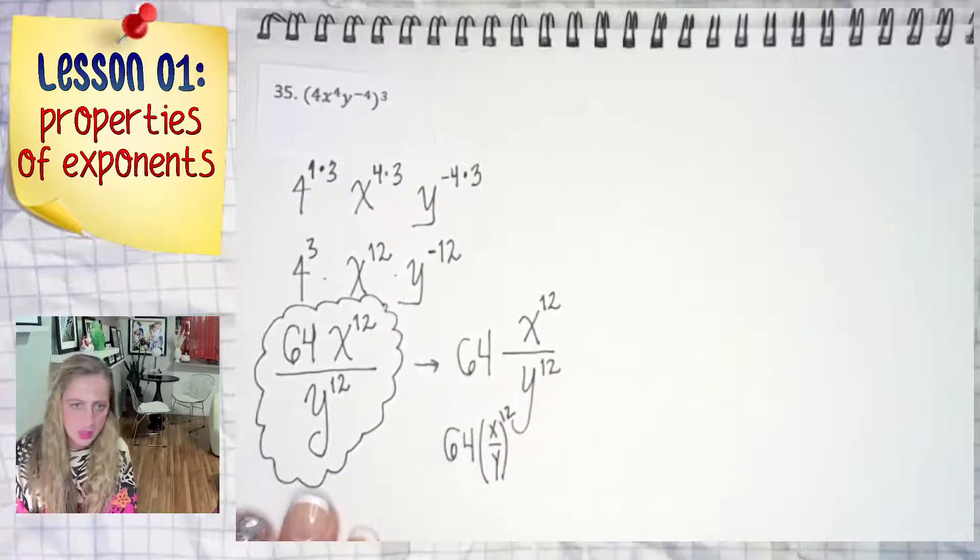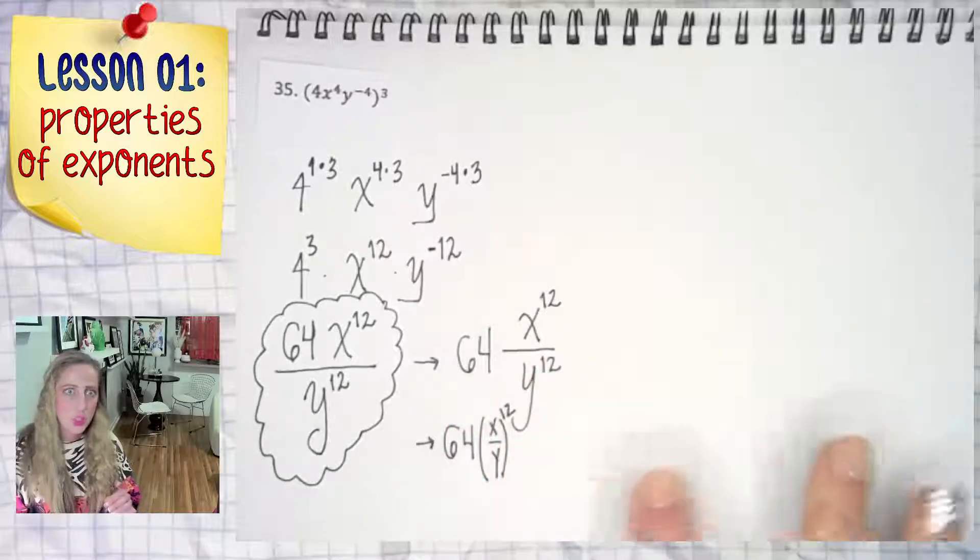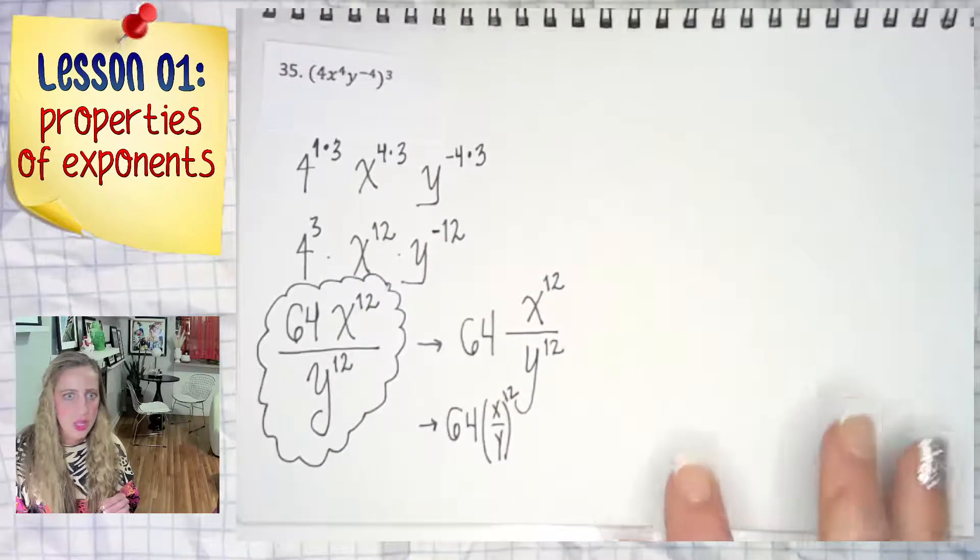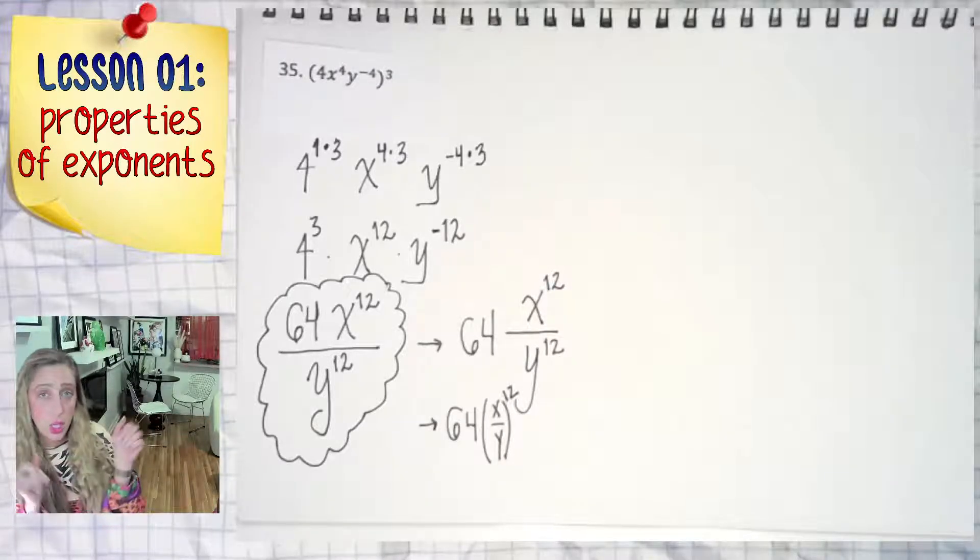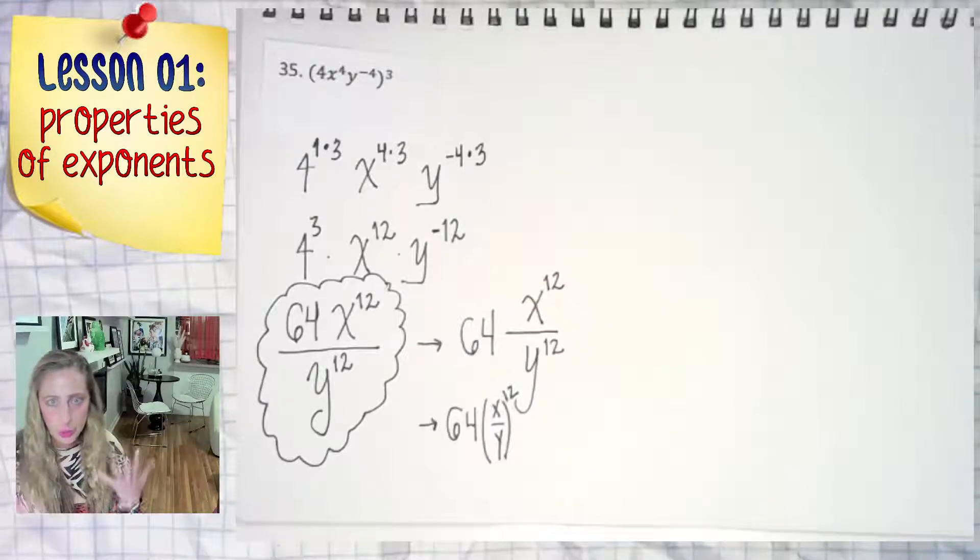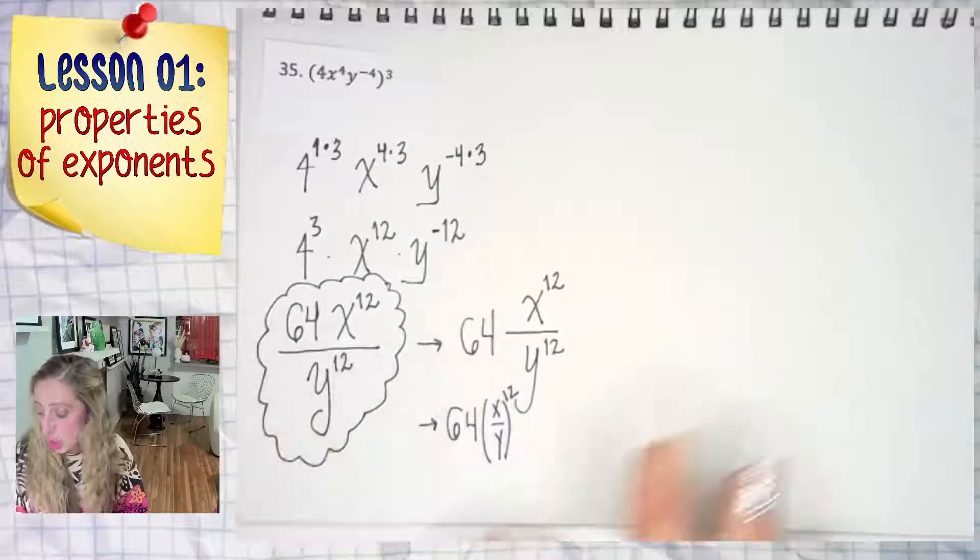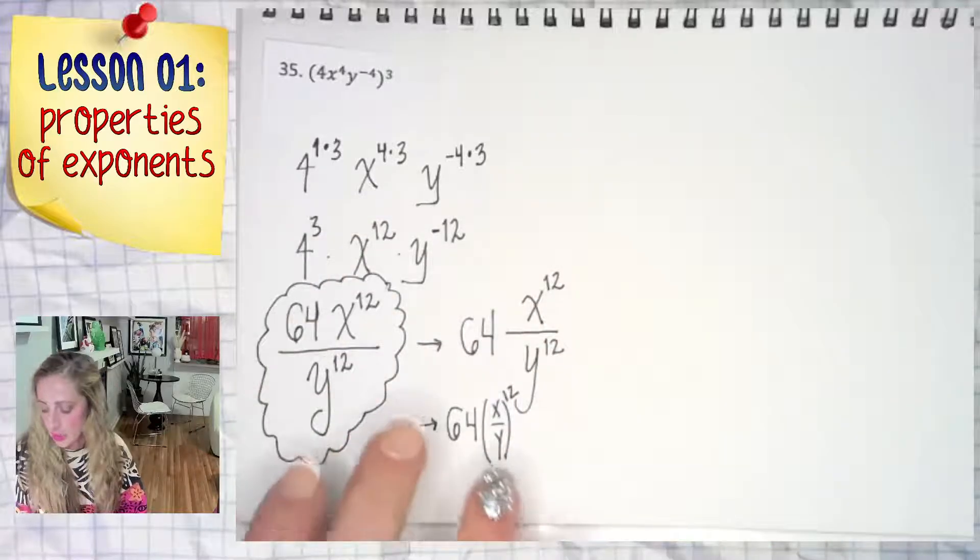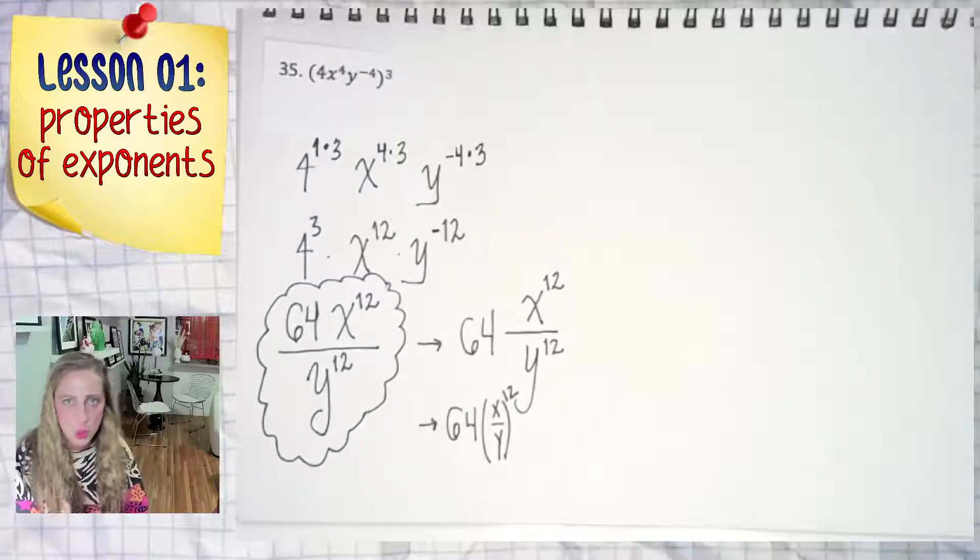You sometimes see these questions with roman numerals and they're like which of the following is equivalent, or it could be the answer, and it's like roman numeral one, two, three, and you have to pick one and two, one and three, all of the above, none of the above. So being a little fluid in your thinking and ability to interpret answers that may be equivalent to what you found but may be presented differently in a sort of multiple choice scenario.